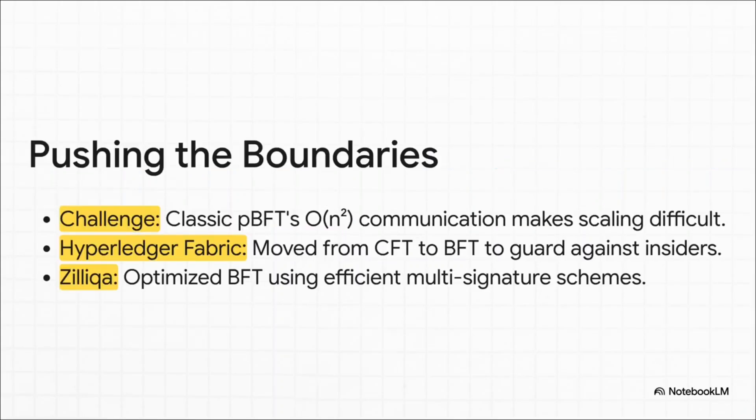But the story's not over. Today, the big challenge is scale. The original PBFT gets bogged down when you add too many nodes because the communication grows exponentially. But innovators are finding clever ways around this. Hyperledger Fabric, for instance, switched to PBFT to protect against insider threats. And projects like Zilliqa are optimizing it with advanced cryptography, letting PBFT's core principles secure absolutely massive networks.